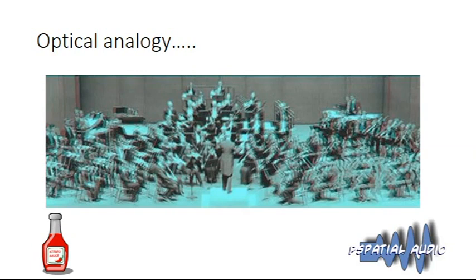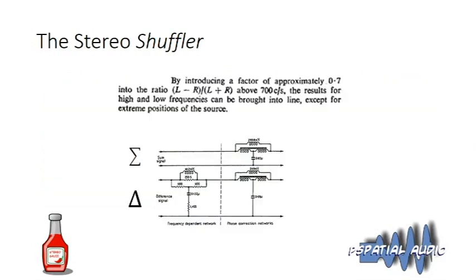Clark, Dutton, and Vanderlyn did not regard this smearing as an acceptable compromise. They found that if they derived a sum signal (L+R) and a difference signal (L−R), and then filtered the difference signal above 700 Hz, they could maintain perceptual register across the frequency range. They called this circuit a 'shuffler' because it was shuffling the stereo image slightly in relation to frequency.